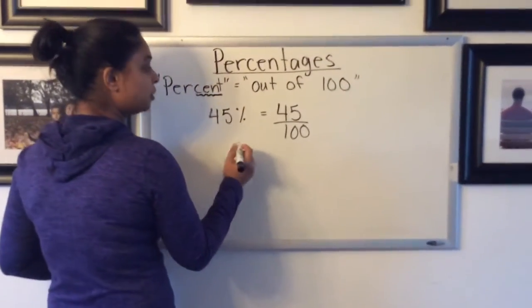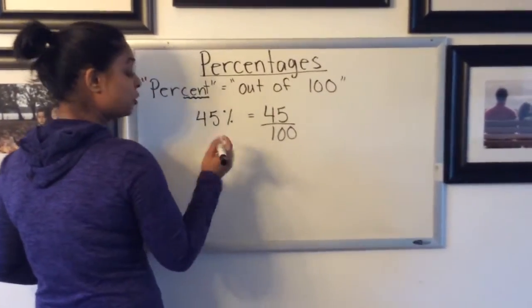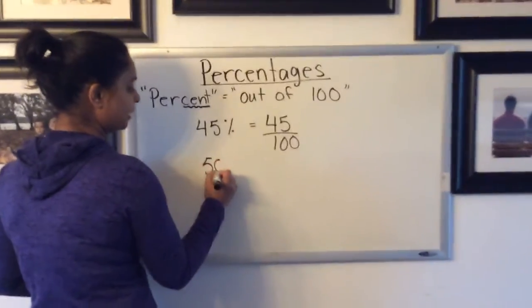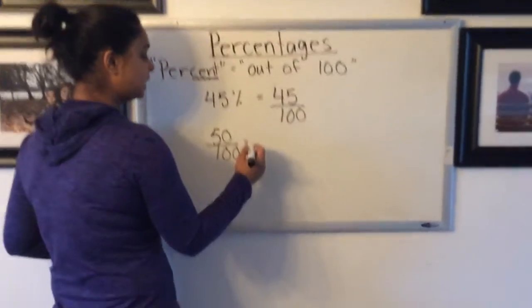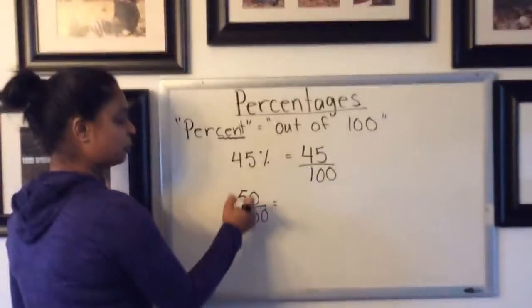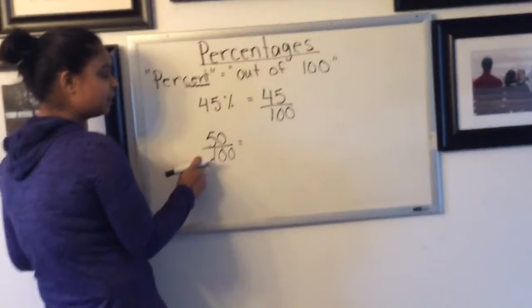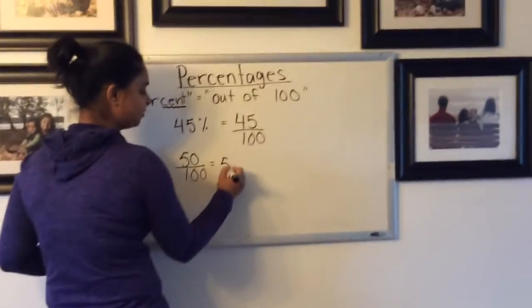If we wanted to reverse this, if I knew what the fraction was, for example 50 out of 100, that would be half. If I wanted to turn that into a percentage, that's very easy because it's already out of 100, so I would just say that's 50%.